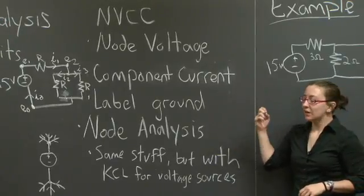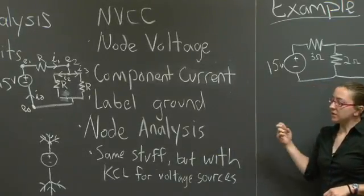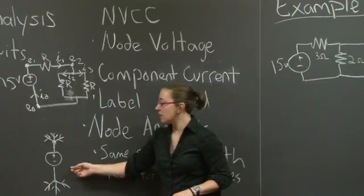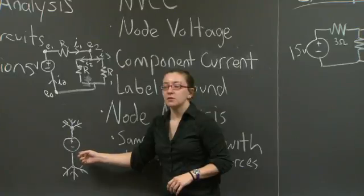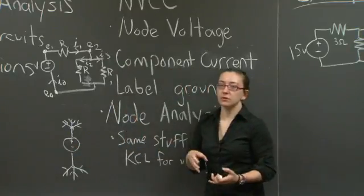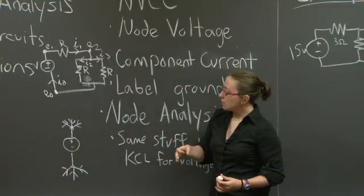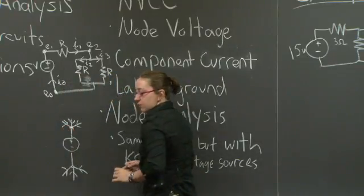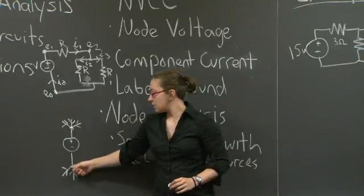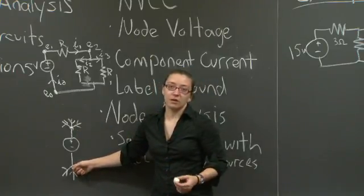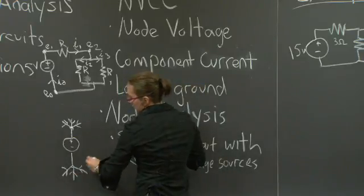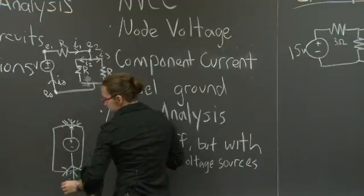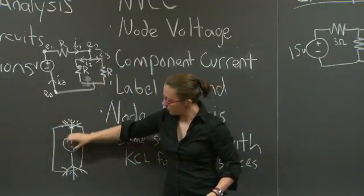Node analysis is very similar. The main difference between node analysis and NVCC method is when your component is a voltage source and there are multiple currents flowing into that voltage source. You can treat this as a single voltage node, where this voltage node has value 0, and actually write your KCL equations as though this point were collapsed.